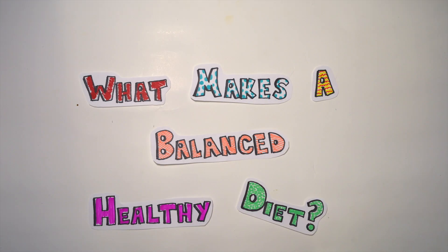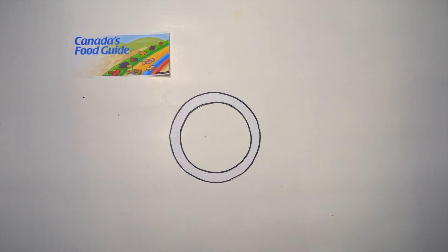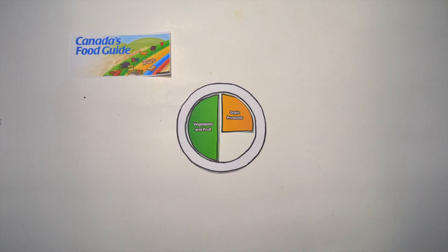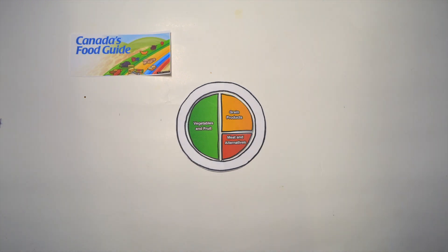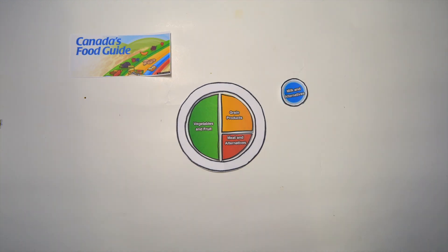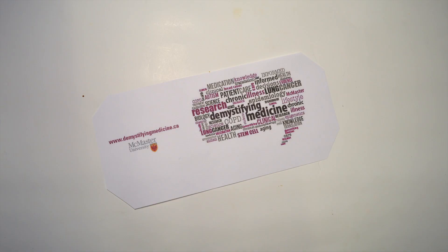What makes a balanced, healthy diet? Canada's Food Guide recommends having 1 half of your meal consisting of vegetables and fruit, 1 quarter filled with grain products, and another quarter consisting of meats and alternatives. It is also important to include dairy products such as milk and cheese in your diet. For more information, please visit us at demystifyingmedicine.ca